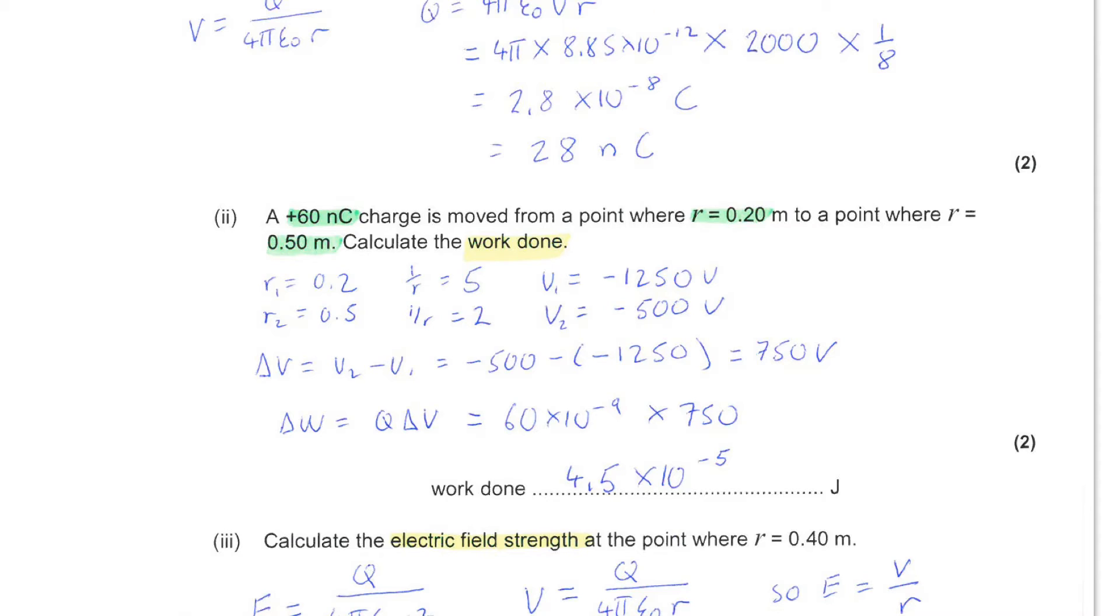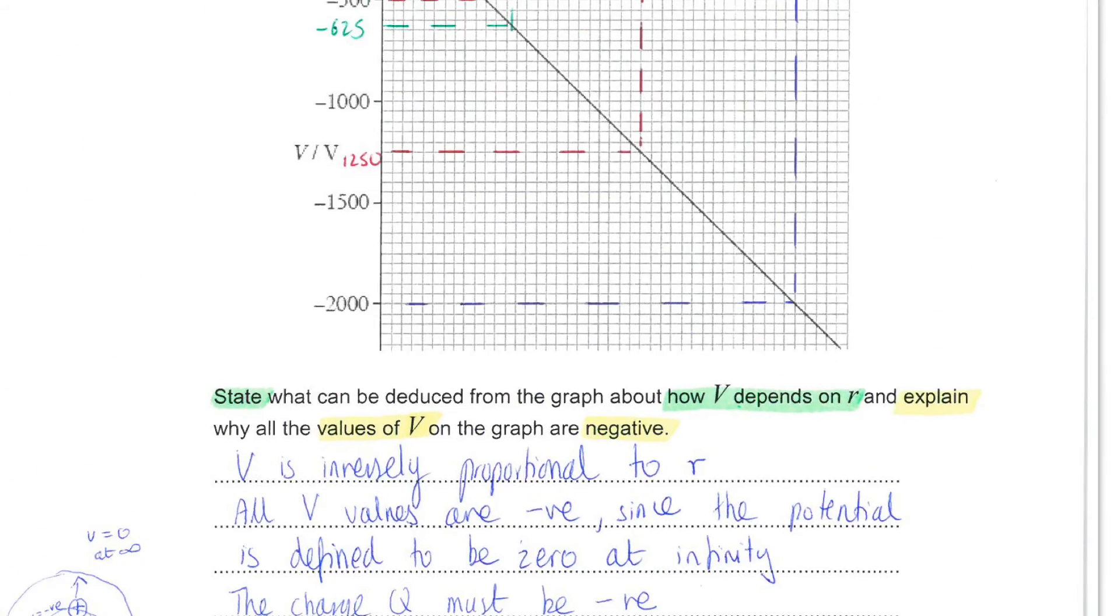So, q equals 4 pi times epsilon 0, the permittivity of free space, multiplied by v and r. Now, you therefore need to get a pair of values for v and r coming from the graph. So, if we take a look back at the graph,